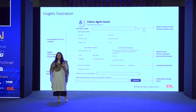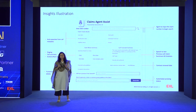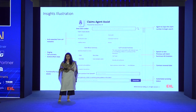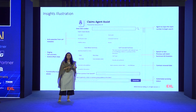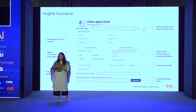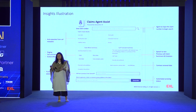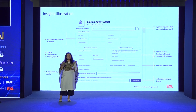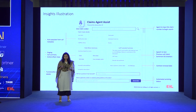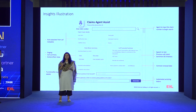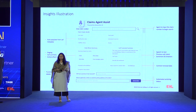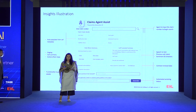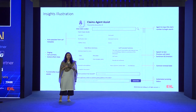Agents can simply enter a claim number to get extracted claim metadata details. Extractive information is facilitated by large language models — we generate summaries telling agents what has been done on the claim, what the next steps are, and what can be done. Additional insights include complaints, financial vulnerabilities, and specific use cases — for example, in bodily injury claims, the model can help determine if there is an opioid user, raising a red flag. This solution acts as a co-pilot for agents, augmenting their intelligence for smarter, quicker decision-making.